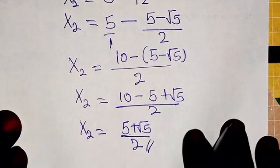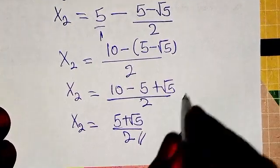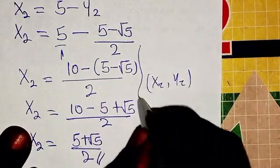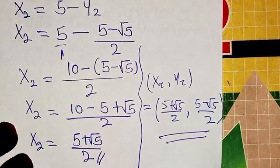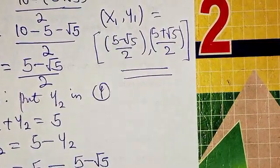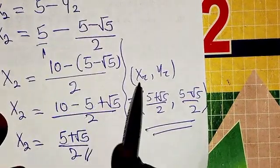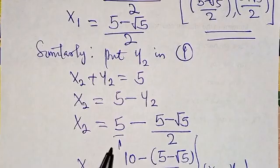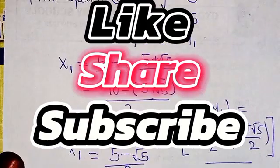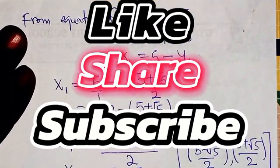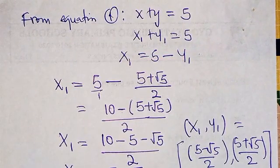So we have two sets of solutions. The first is x1, y1: 5 minus root 5 over 2 and 5 plus root 5 over 2. The second is x2, y2: 5 plus root 5 over 2 and 5 minus root 5 over 2. That is the solution to the problem. If you find this class very interesting, please share it, subscribe to our YouTube channel, and hit the bell icon to be notified when we upload new content. Thank you, bye.